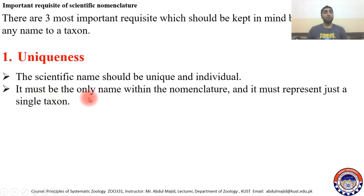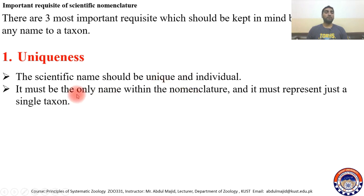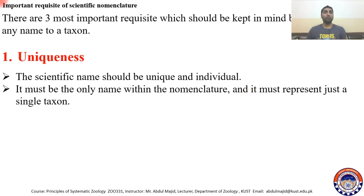The name must be the only name within the nomenclature. Within zoological nomenclature, there will be no same name — it will be the only name within the whole nomenclature. It must represent just a single taxon, because a single name representing two, three, or four taxa would create confusion.